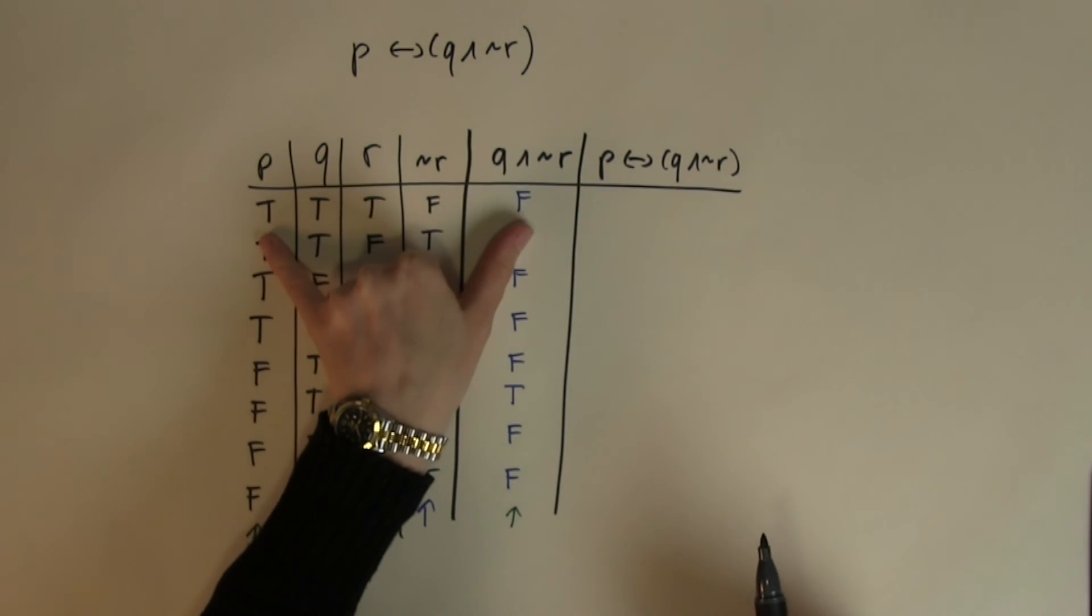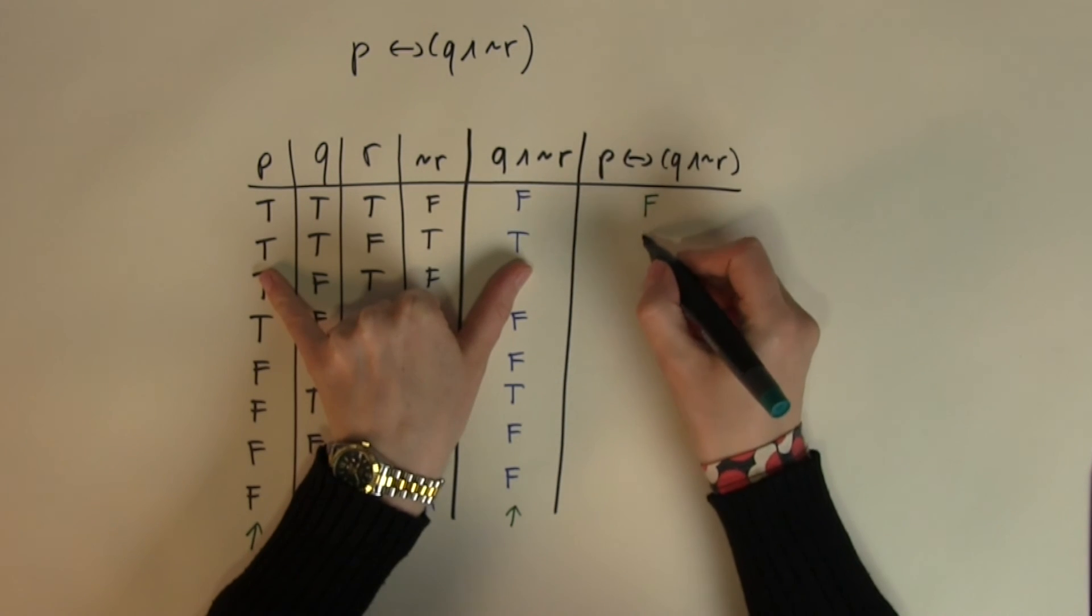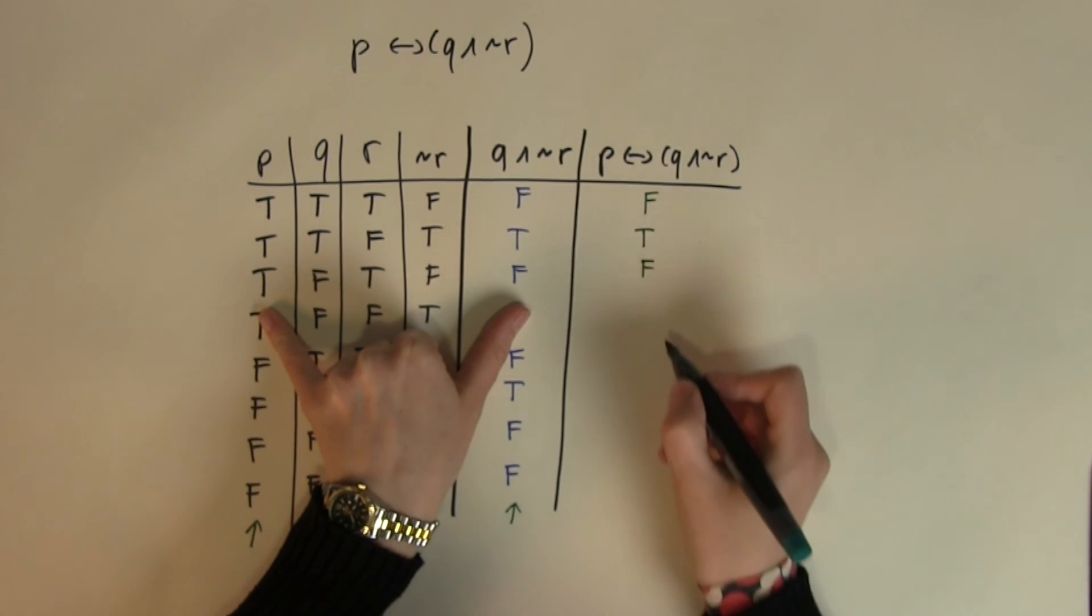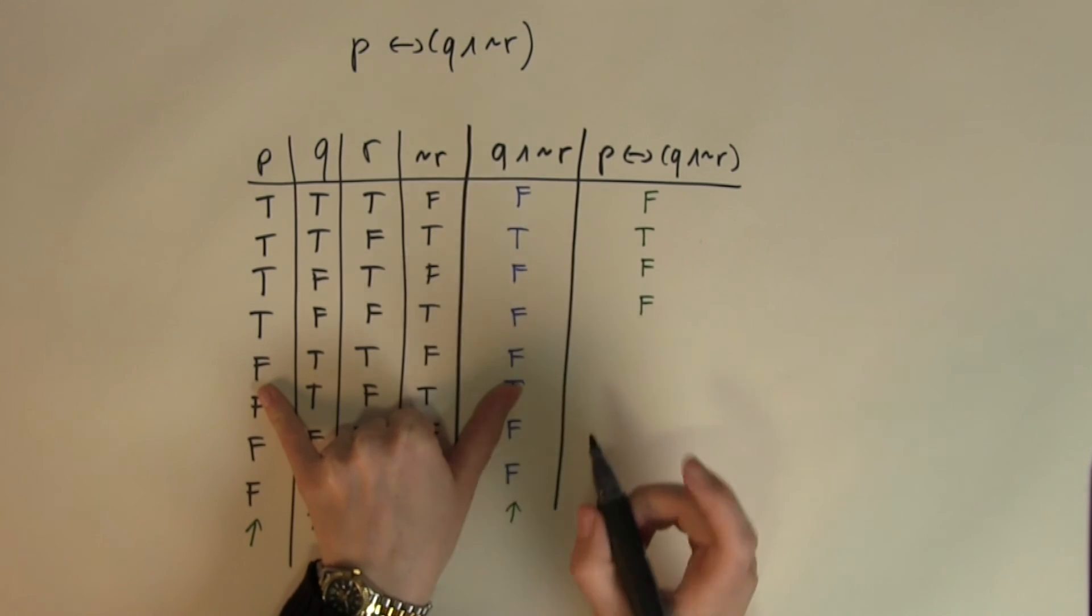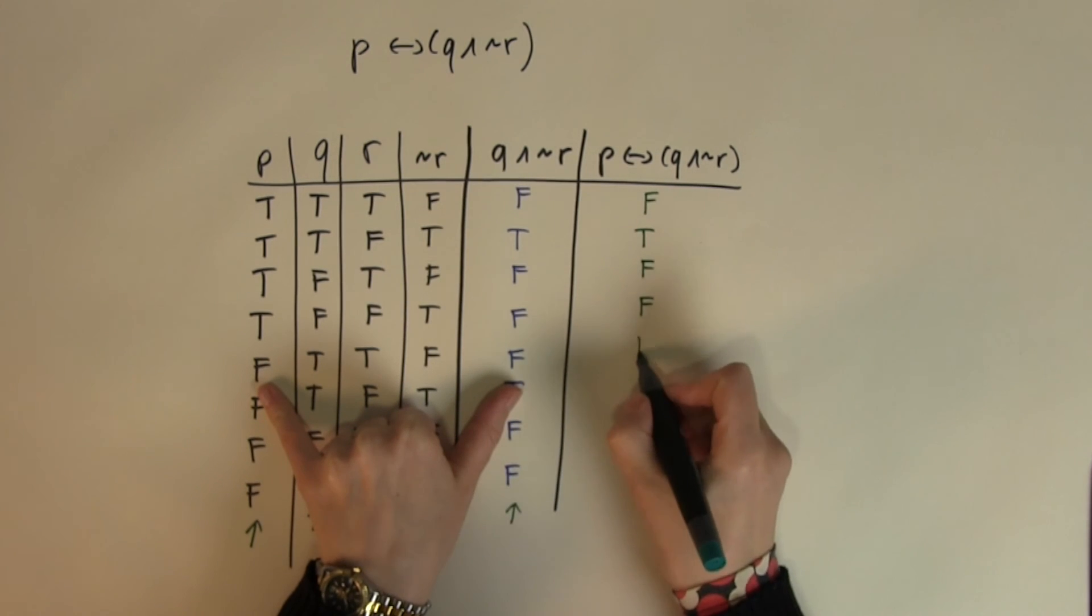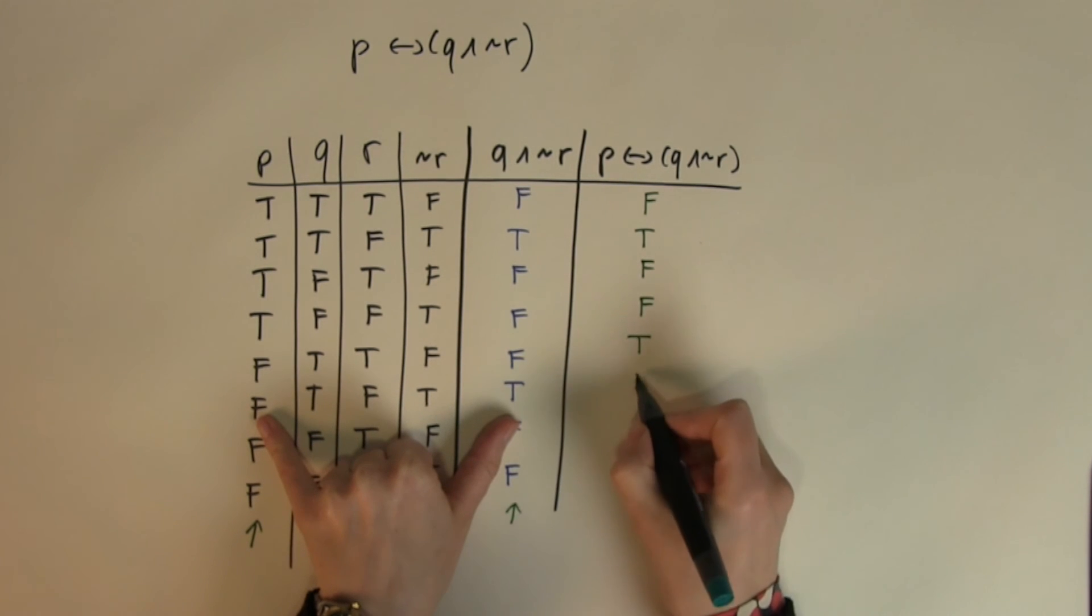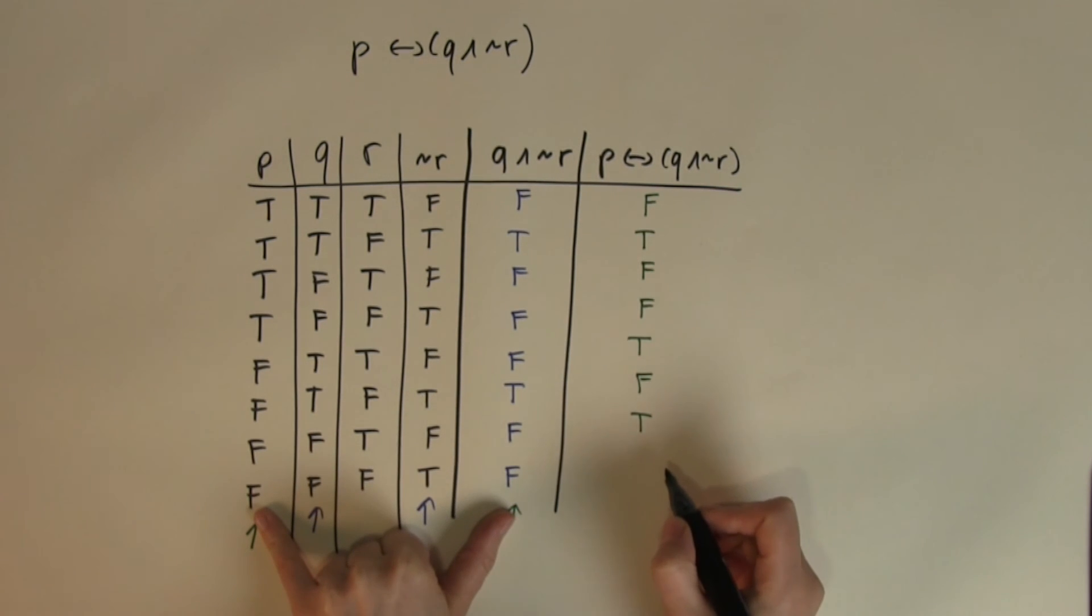So, look at this. True false different so I'm returning a false. True true the same I'm returning a true. True and false different I'm returning a false. True and false different returning a false. False and false the same, so I'm returning a true. False and true different, I'm returning a false. False and false the same, I'm returning a true. And false and false the same again, I'm returning a true.